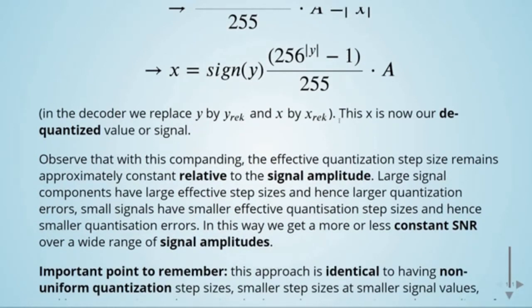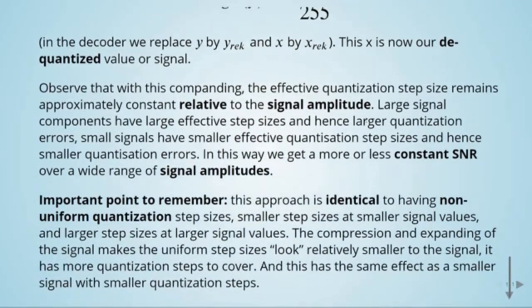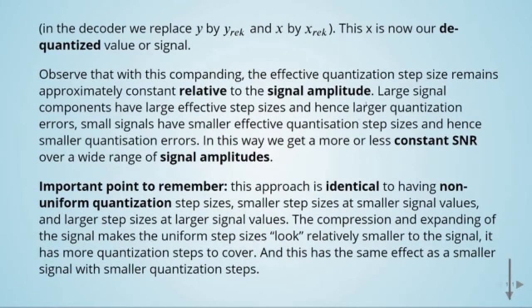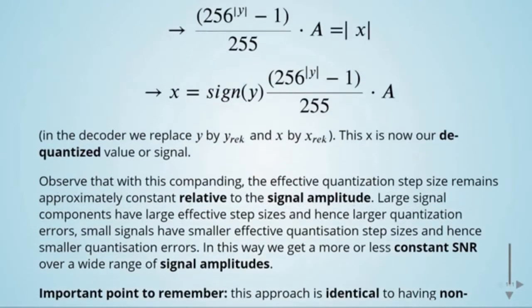With companding, the effective quantization step size remains approximately constant relative to the signal amplitude. Large signal components have large effective step sizes and hence larger quantization error, while small signals have smaller effective quantization steps and hence smaller quantization errors. This gives a more or less constant signal-to-noise ratio over a wide range of signal amplitudes. This is equivalent to having non-uniform quantization step sizes — smaller steps at small signal values and larger steps at larger signal values.